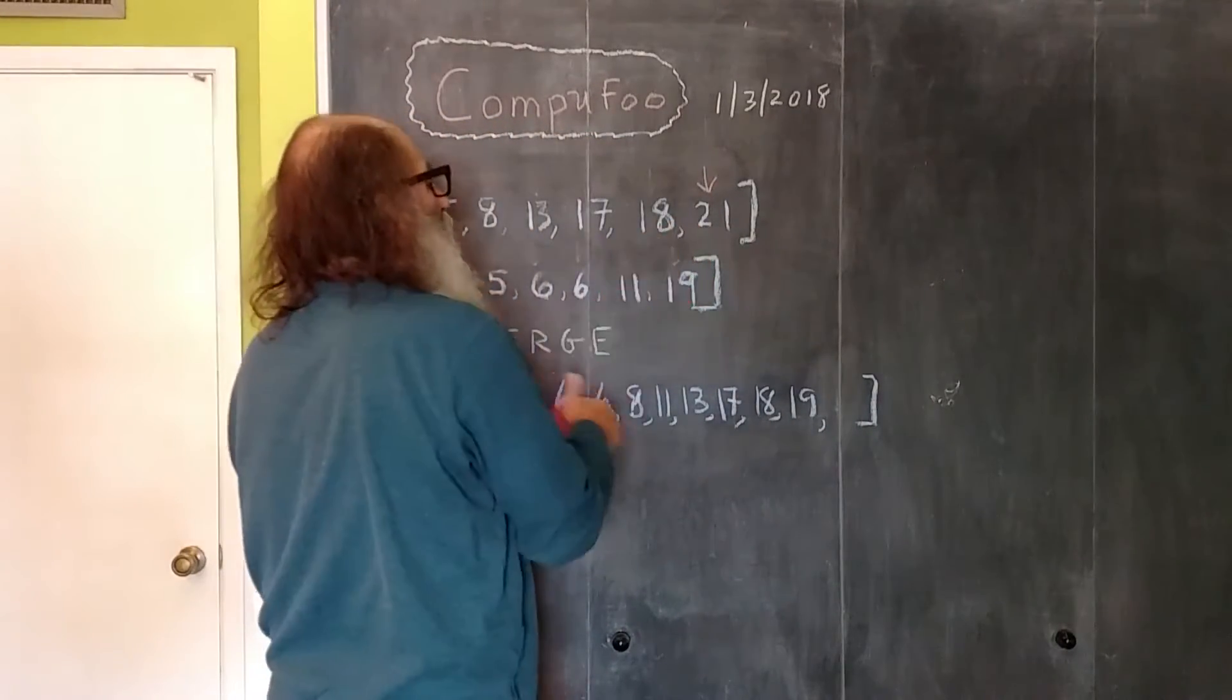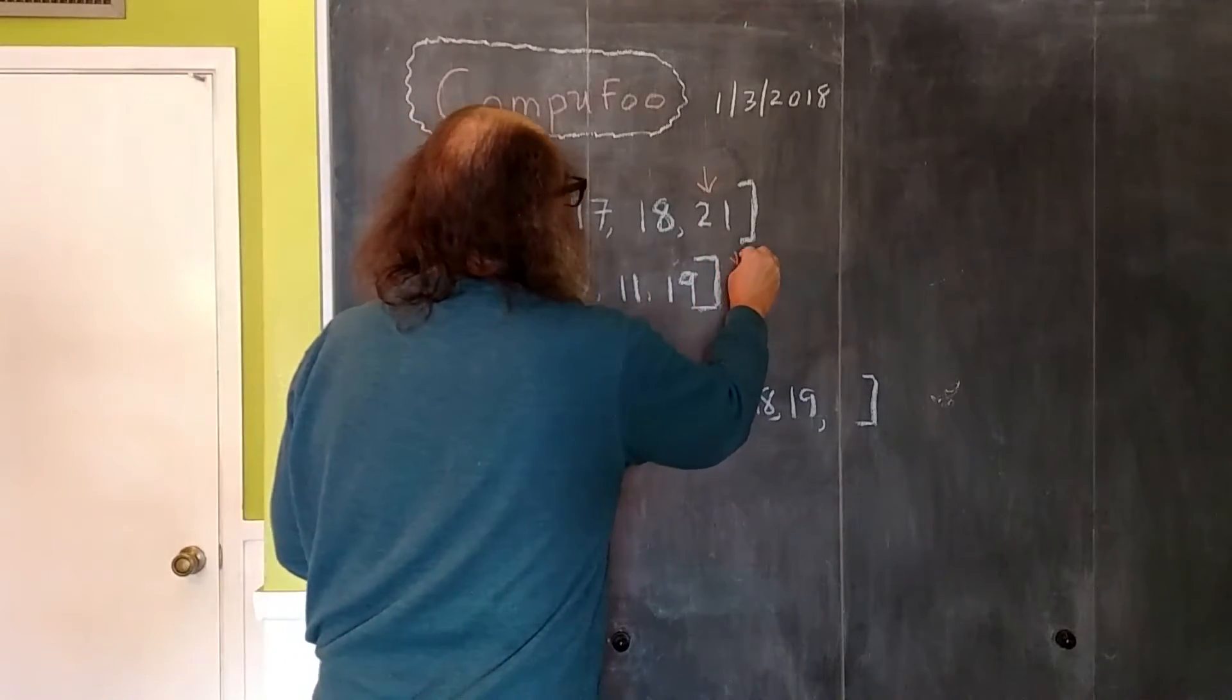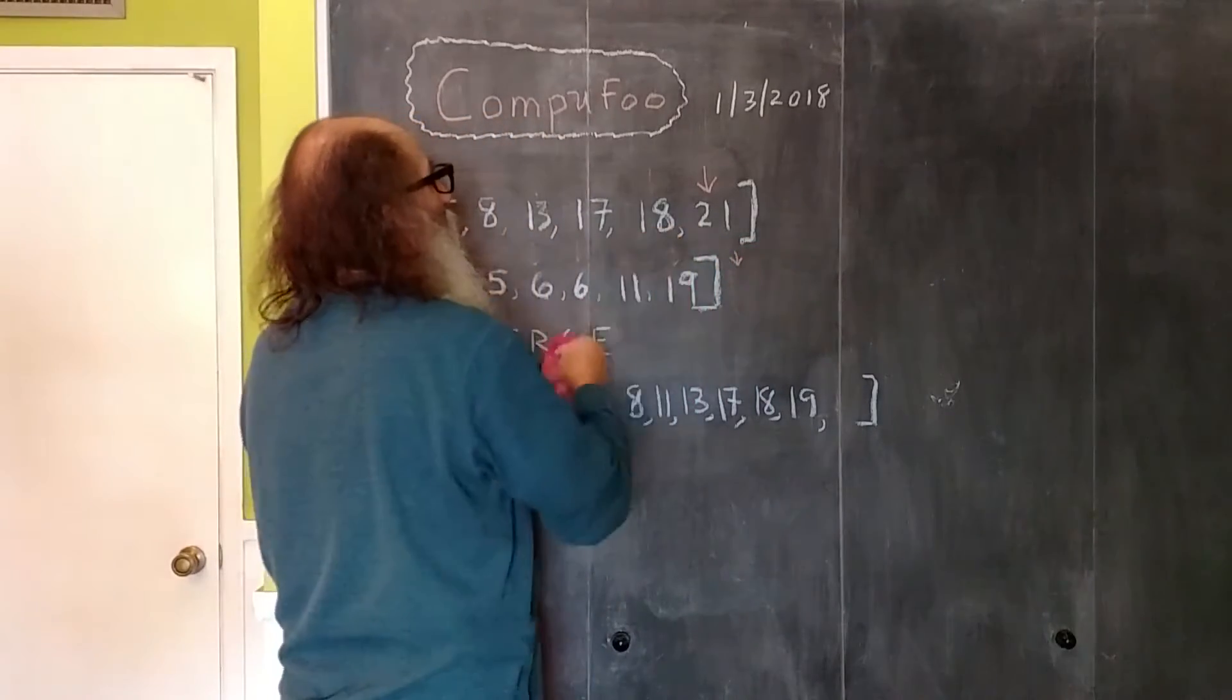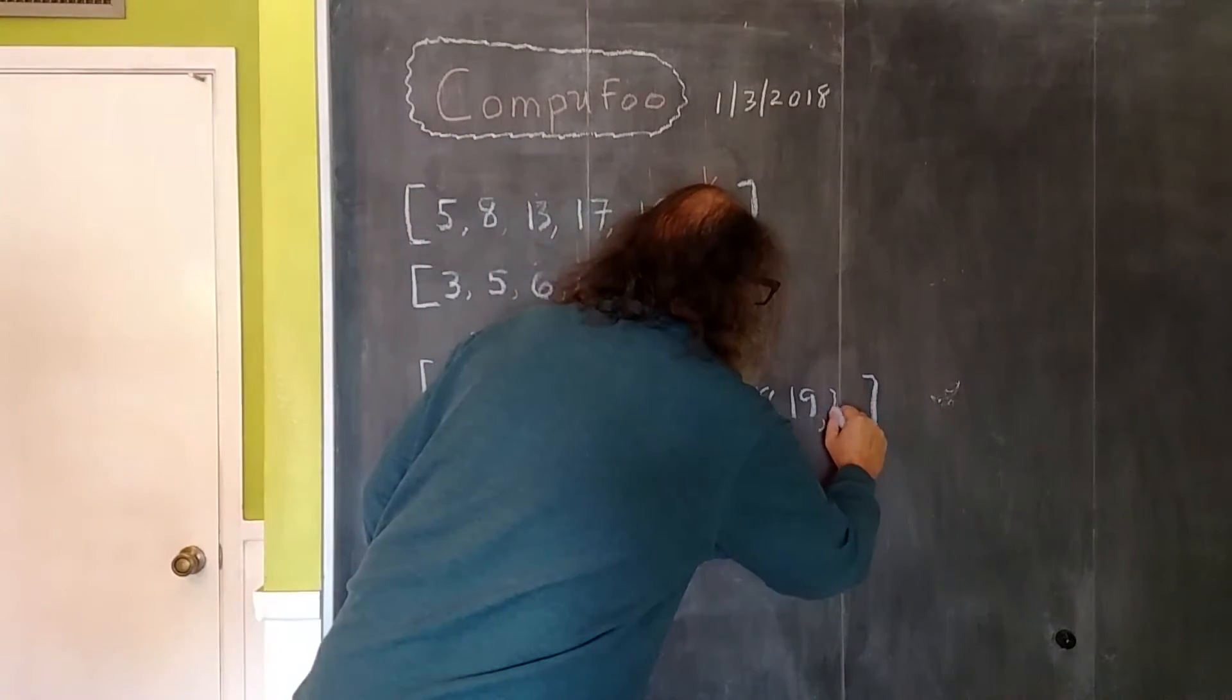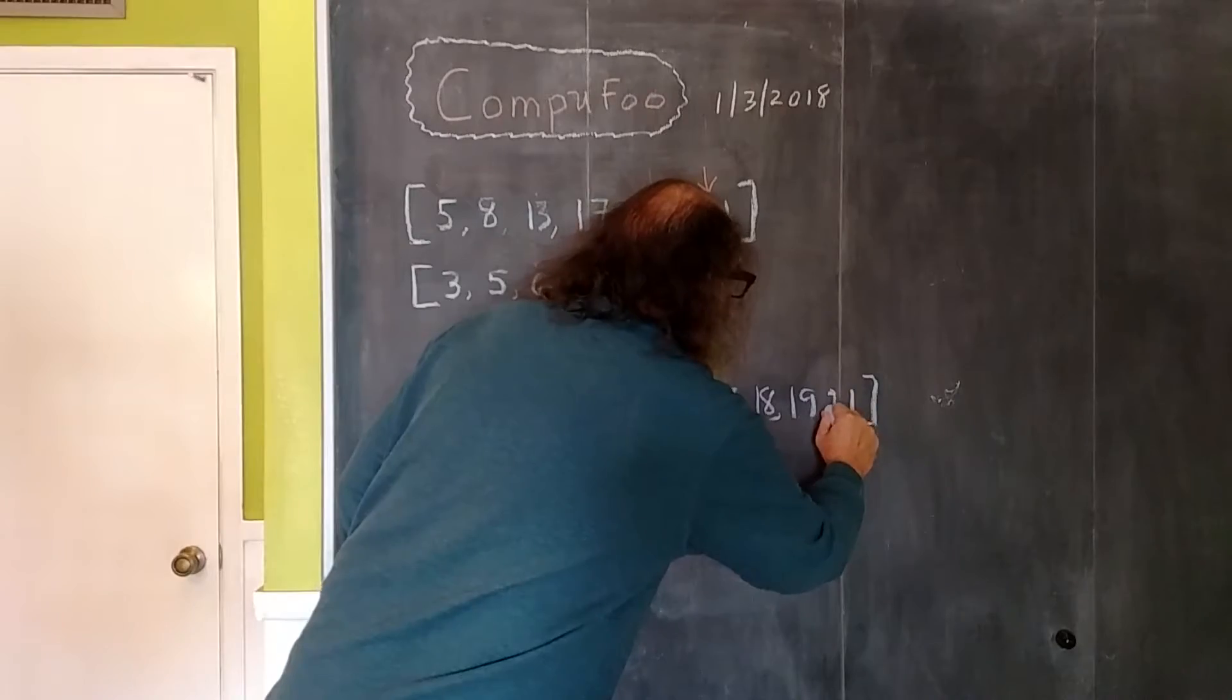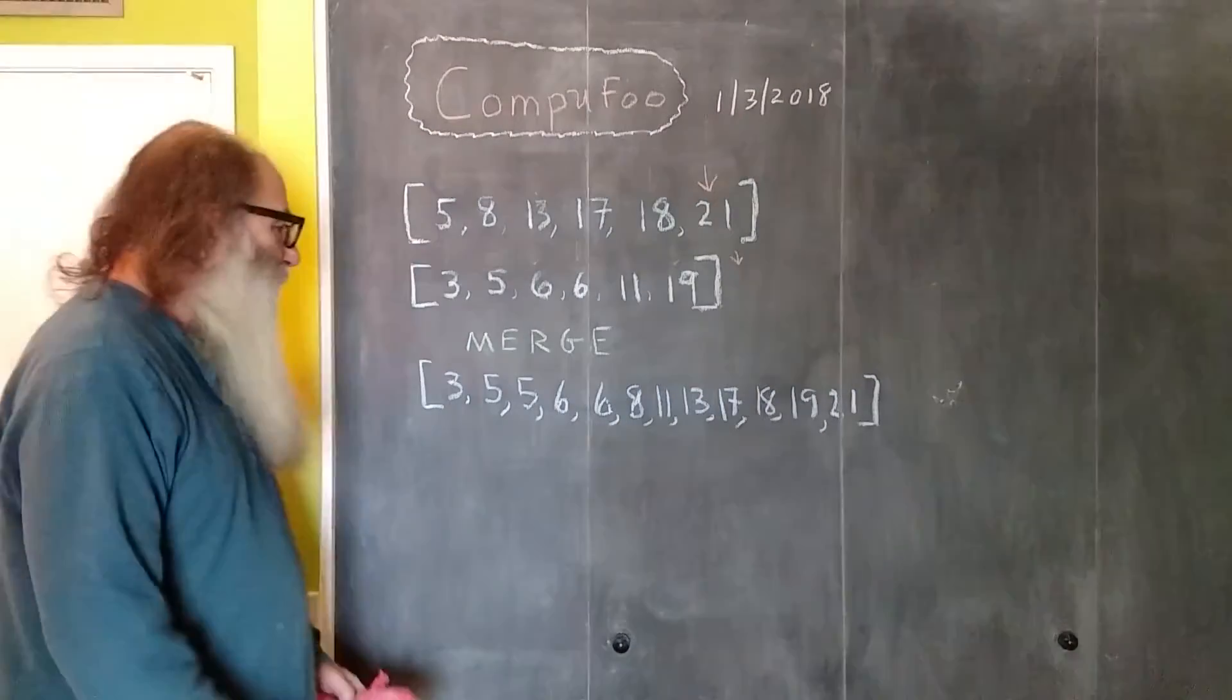This pointer hits the end of the array so we're done with it. Numbers are left up here so the 21 will go ahead and be put into the merge array, and when we're all done doing this you will see that